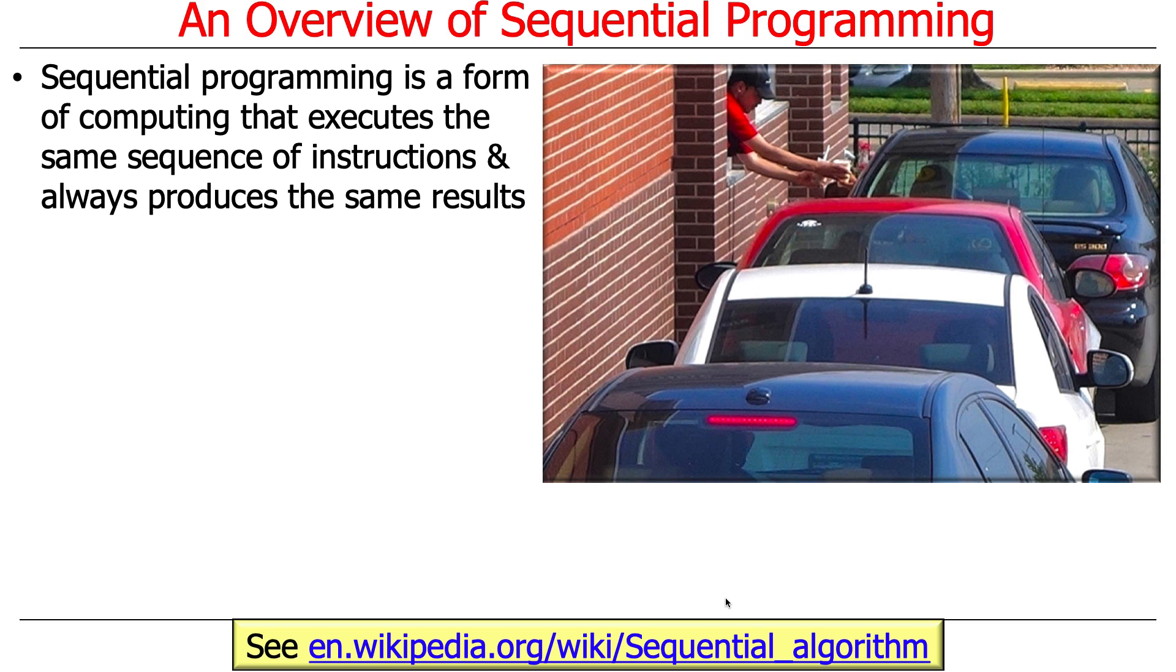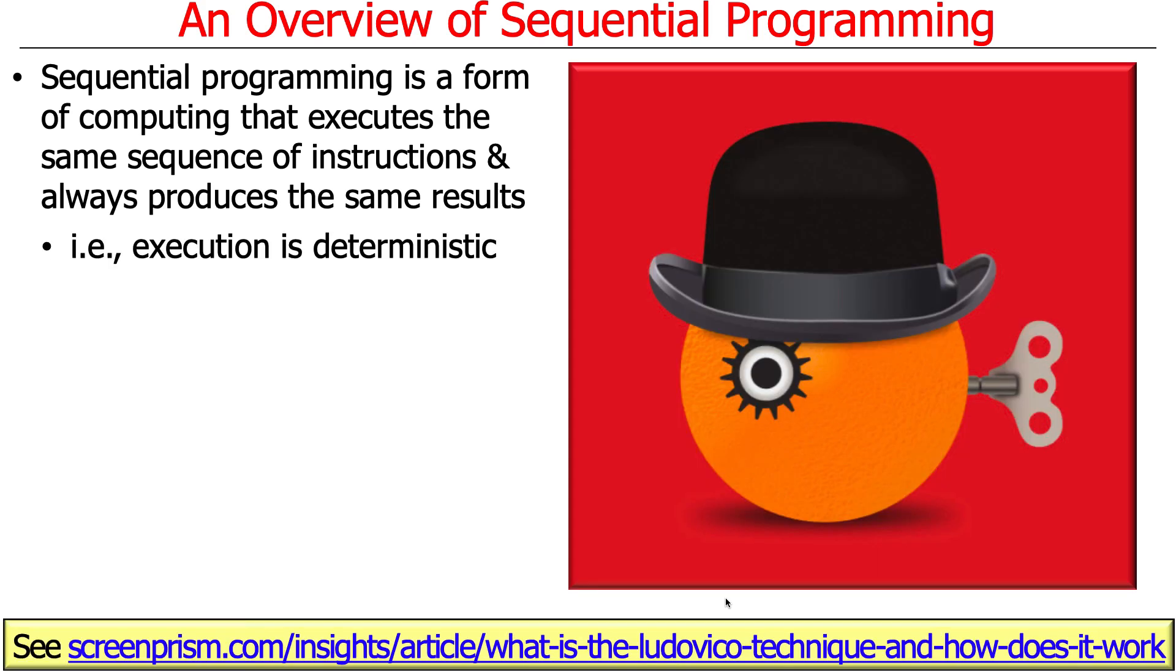So you kind of go in order, and it doesn't matter if this person in this car just wants to get a soda, they're going to get stuck behind everybody else who are doing something more complicated. So it's one thing at a time, and you always have the same result. In other words, the results of the execution is deterministic.